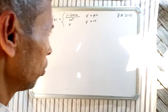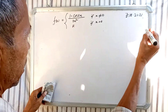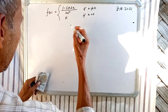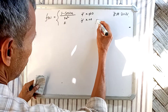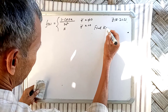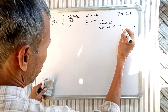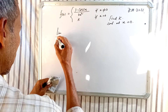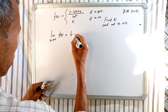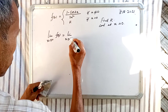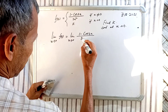Namaskar from my channel Om Adi Vijaya. Given f(x) = (1 - cos2x) / (2x²) for x ≠ 0, and f(0) = k, find k such that f is continuous at x = 0. We evaluate the limit as x tends to 0 of (1 - cos2x) / (2x²).